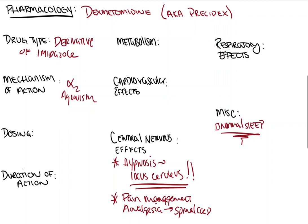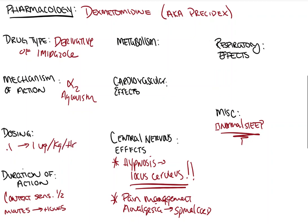As far as duration of action goes, it's not really given as an induction bolus dose, but rather as a drip for sedation. We talk about it in its context-sensitive half-time — how long the drug lasts once you stop an infusion — and with this drug it depends on how long the infusion has been going, anywhere from minutes to hours. As far as dosing goes, we run this anywhere from 0.1 up to 1 microgram per kilogram per hour as our sedation dose, and we can also bolus it from 0.2 to 0.7 micrograms per kilogram as an initial bolus before starting the drip.